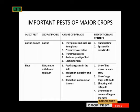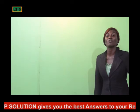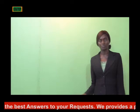The effects of insect pests in crop production: number one, they destroy the crops — they bite, bore, and chew — which causes a reduction in the viability of the stored produce. For instance, you buy beans from the market, keep it to plant on your farm, and before you get there you discover that weevils have come in and destroyed it. It's terrible.